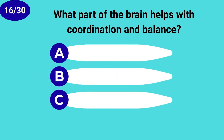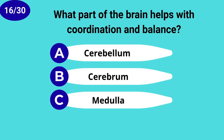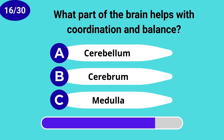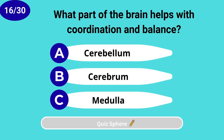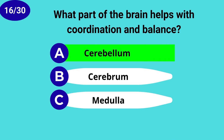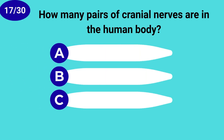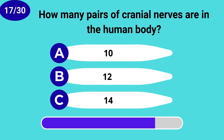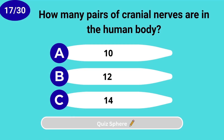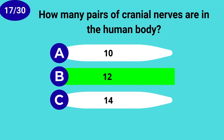What part of the brain helps with coordination and balance? Cerebellum. How many pairs of cranial nerves are in the human body? Twelve.